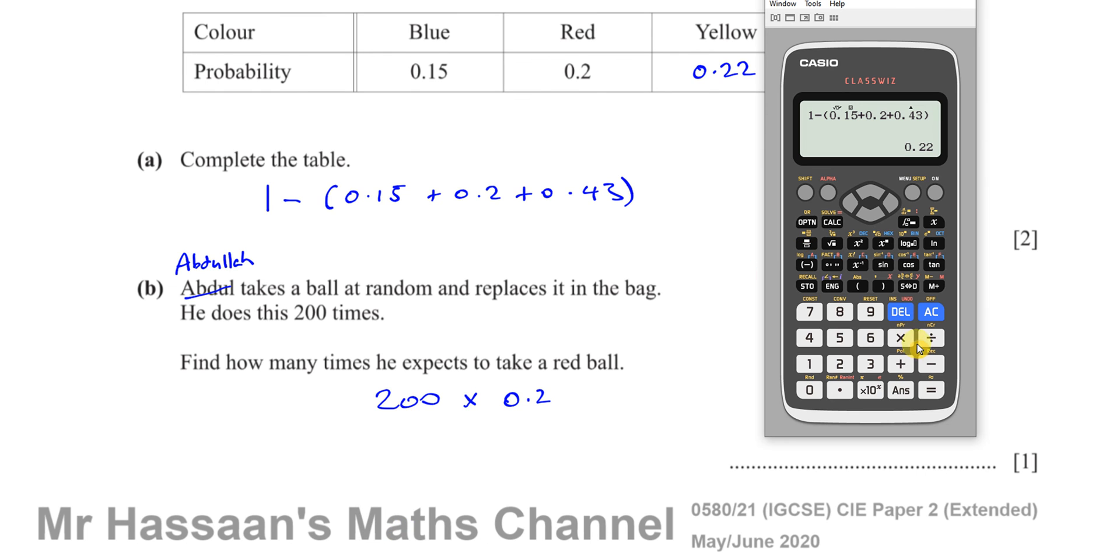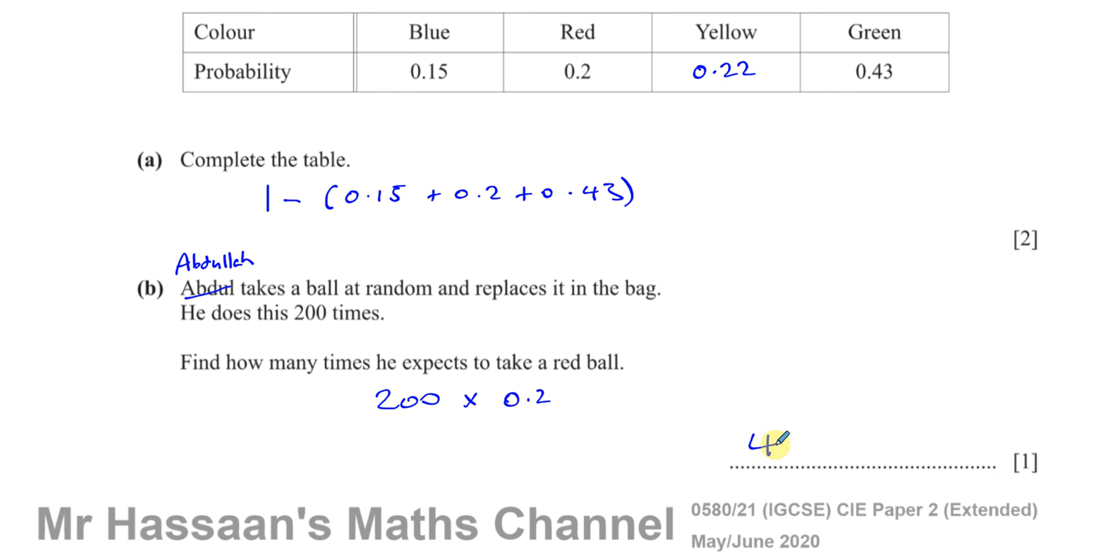So let's just take this 0.2 and multiply it by 200. That's going to give you 40 times. You will expect to take a red ball 40 times. That's the expected probability if the probability of picking a red is 0.2.